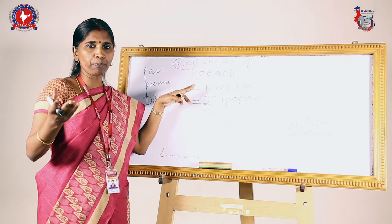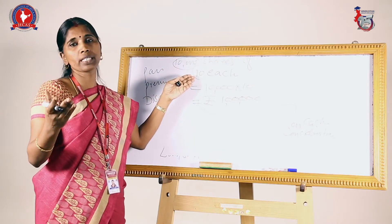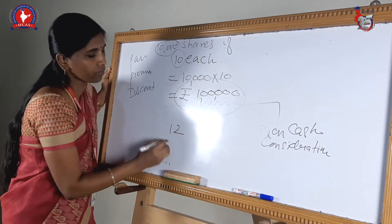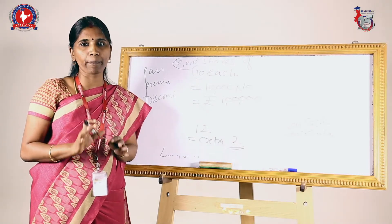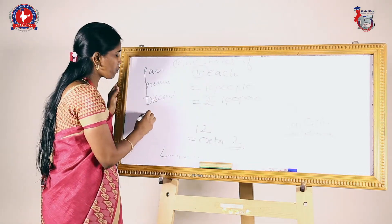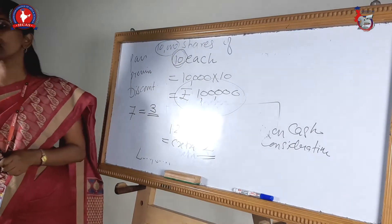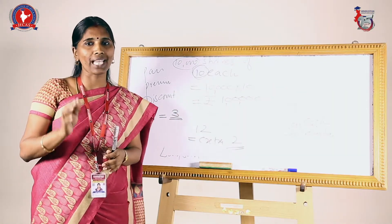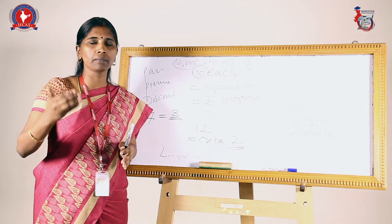If the company issues shares of 10 rupees each for 10 rupees, it is called shares issued at par. When 10 rupees shares are issued for 12 rupees, the extra 2 rupees is called premium, and this premium is a capital profit for the company. When the same shares instead of 10 rupees are issued for 7 rupees, the difference of 3 rupees is the discount. The discount is a capital loss for the company. So a company can issue at par, premium, or discount.